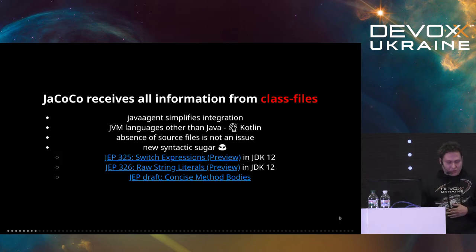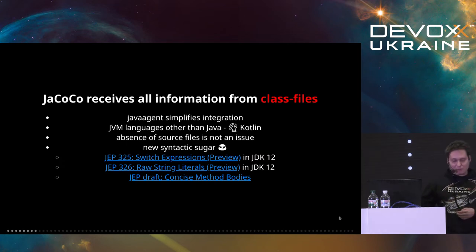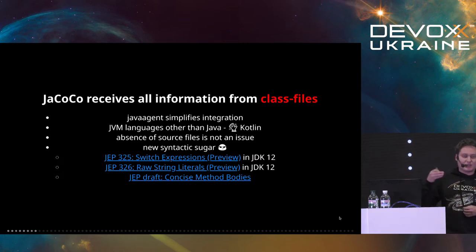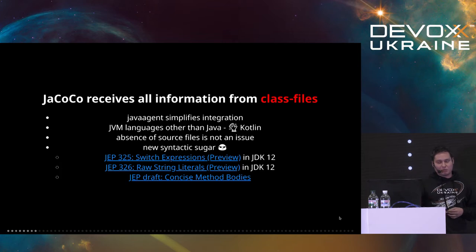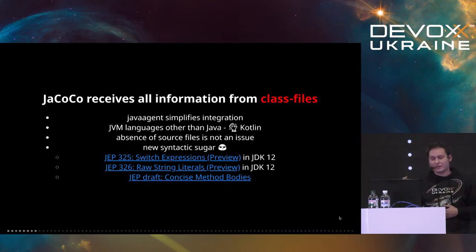This also helps to support new Java versions if they do not change the bytecode. For example, in JDK 10 or JDK 12 there will be switch expressions, raw string literals, maybe concise method bodies. All of this does not affect the bytecode generated — it's pure syntax sugar, so it should be a no-brainer for the tools to support them. Pretty much the same thing happened with try-with-resources, which we're going to look at later.